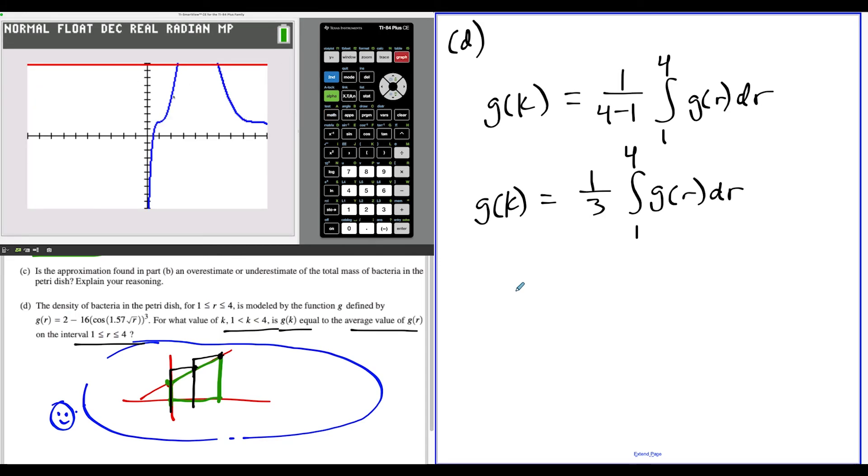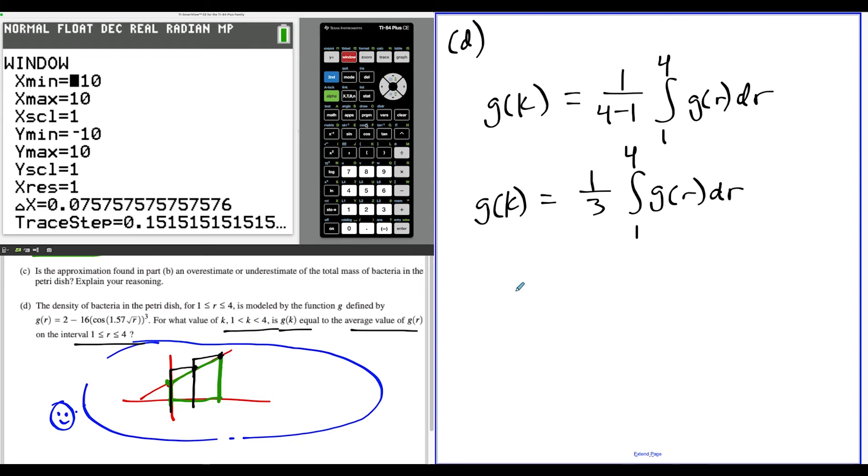Now if you just graph this thing normally, there's a lot of stuff going on. Notice they gave us a subinterval to look at—they said k is between 1 and 4. So we're going from 1 to 4. And now because our answer, our average value, was between 9 and 10, I'm just going to make this graph a little bit taller so you can see this more clearly.